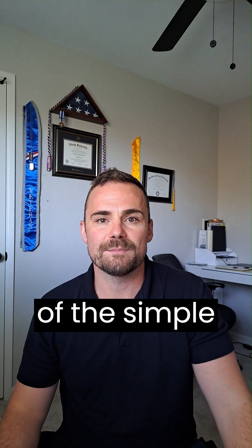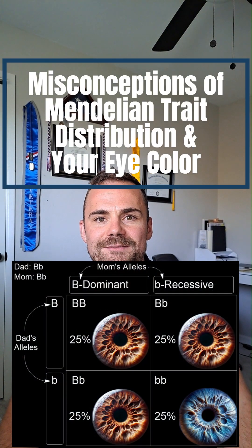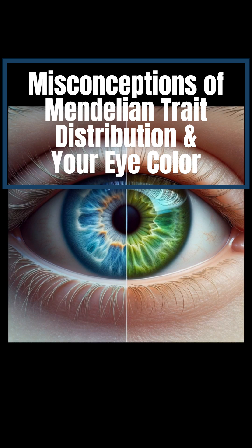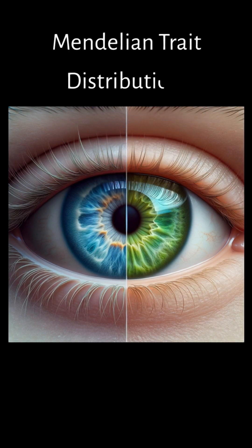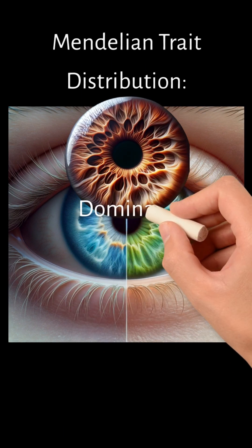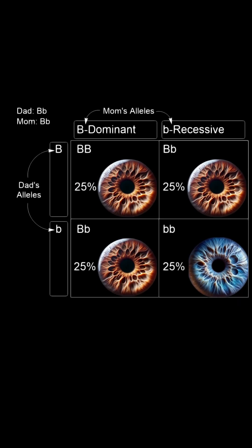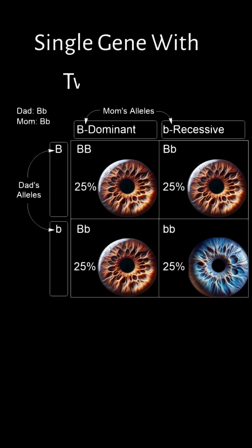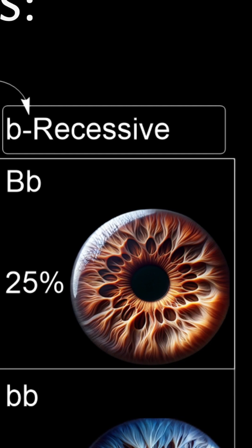These are the misconceptions of the simple Mendelian trait distribution pertaining to your eye color. Initially, eye color was thought to follow a simple Mendelian trait distribution where brown eyes were considered dominant and blue eyes recessive. In this model, eye color was determined by a single gene with two alleles, one dominant and one recessive.